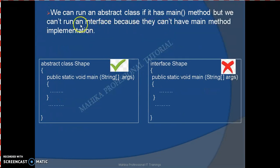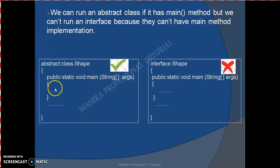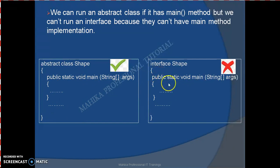We can run an abstract class if it has a main method. But we cannot run an interface because interfaces cannot have a main method implementation. So we can have an abstract class which consists of a main method, but we cannot code a main method inside an interface.